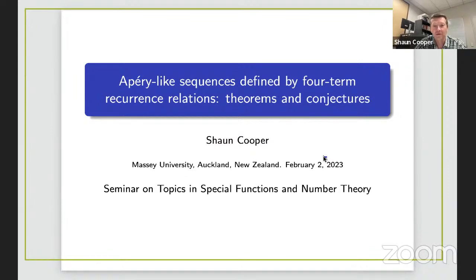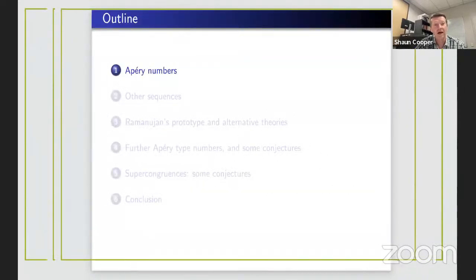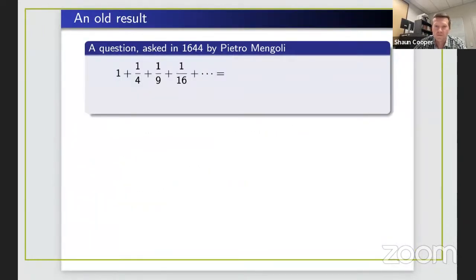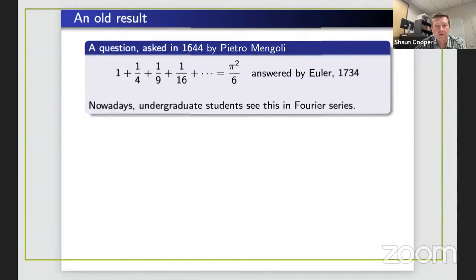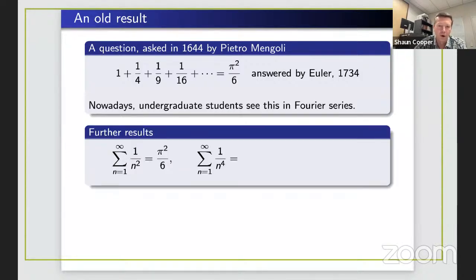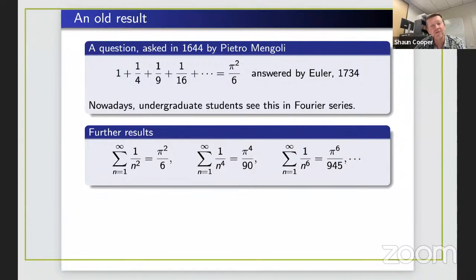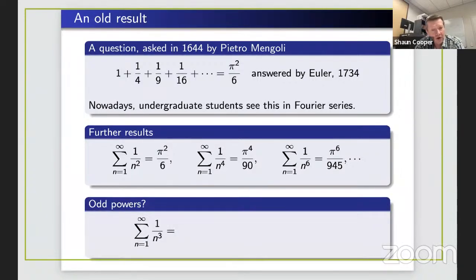I'm going to talk about Apéry-like sequences. Let's start with what are Apéry numbers. We'll go back about 400 years to an old question: the sum of the reciprocals of the square numbers. Euler answered that — it's π² over 6. Nowadays undergraduate students see this in Fourier series. The corresponding result for fourth powers is π⁴ over 90, for sixth powers there's a general result for even powers.